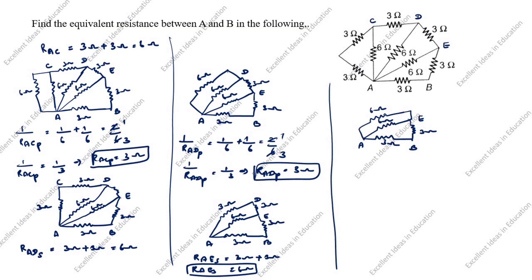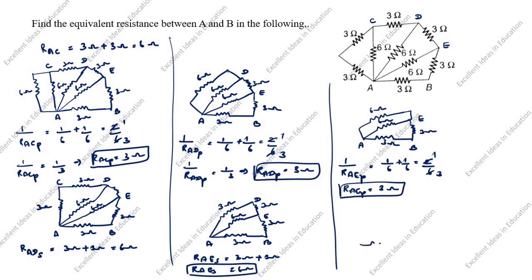These two resistors are in parallel: 1/R_AE_parallel = 1/6 + 1/6 = 2/6, so R_AE_parallel = 3 ohm. Next we redraw: the circuit now shows 3 ohm, 3 ohm, 3 ohm, 3 ohm between nodes A, B, E.